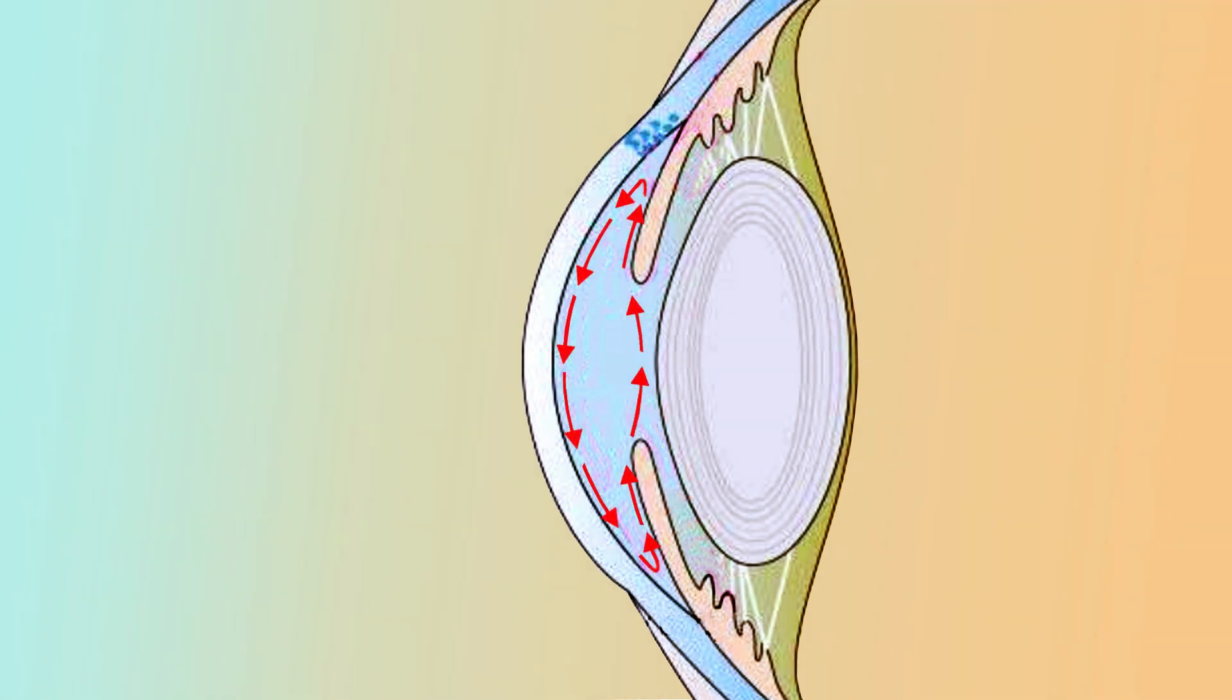Aqueous in the anterior chamber is not static and is in constant motion. The aqueous secretion, buoyancy, interaction between buoyancy and gravity, and rapid eye movement are all responsible for constant motion of aqueous in AC.